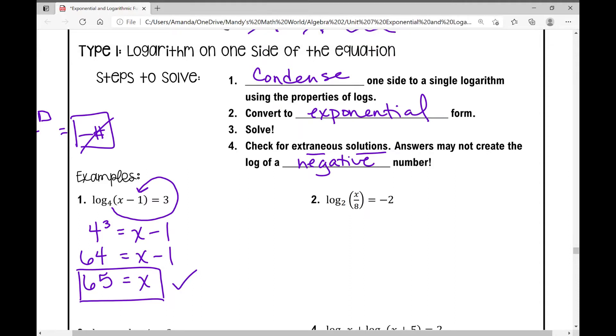Let's move on to number two. I'm going to rewrite this the same way. I don't need to condense it. So it's two to the power of negative two equals x over eight.